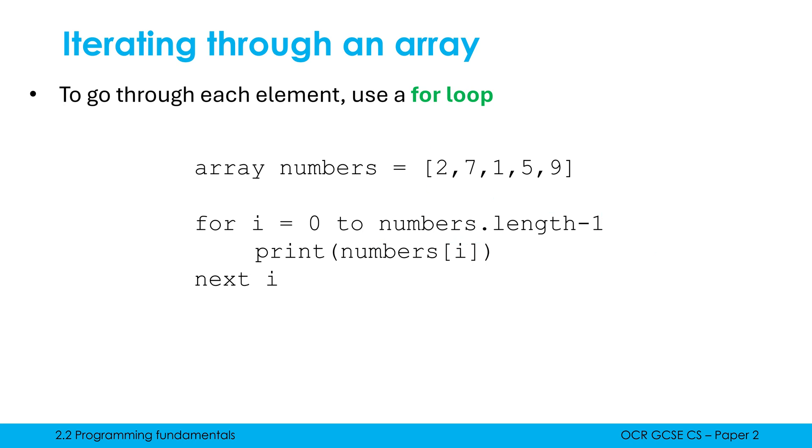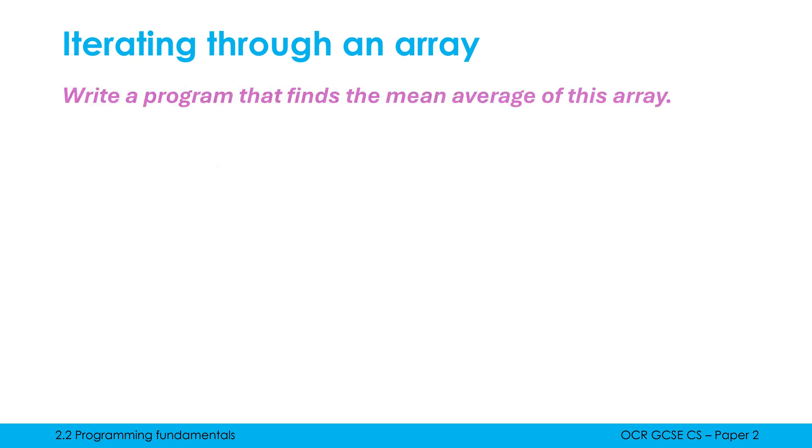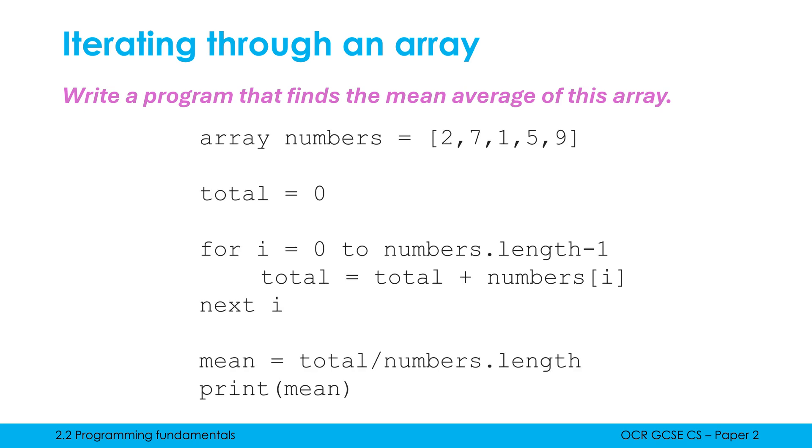So this code is used really often, you see it really often, because every time you want to go through each element one by one, we're going to use a for loop like this. So let's look at it with an actual context. Let's make a more efficient version of our program, which finds the mean average of this array.